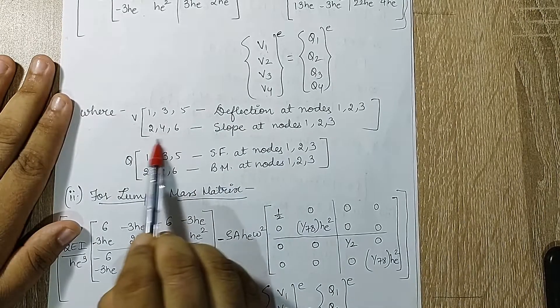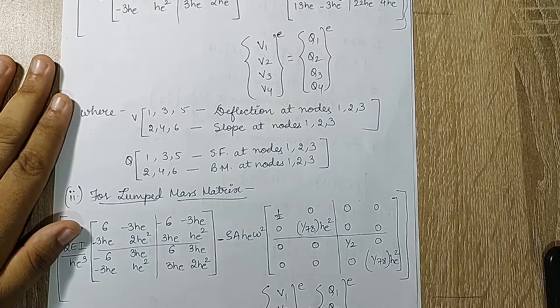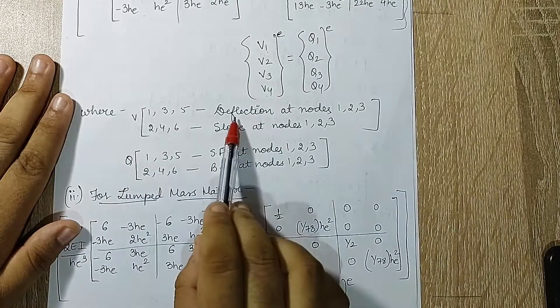2, 4, 6, odd number and even number. If you recollect, this is again the concept of trusses and beams. There also we have used the same concept, only that we were using a w term over there for indicating deflection and slope.